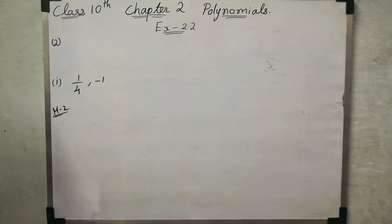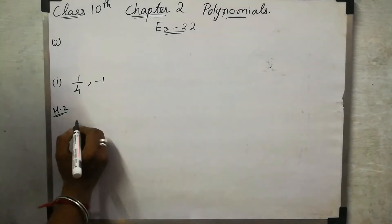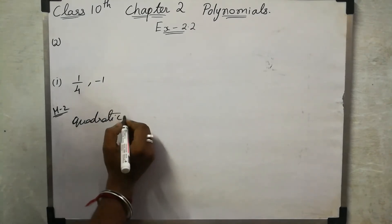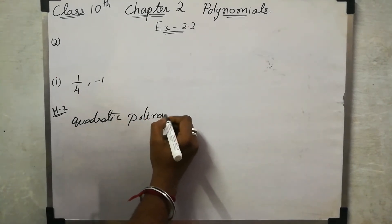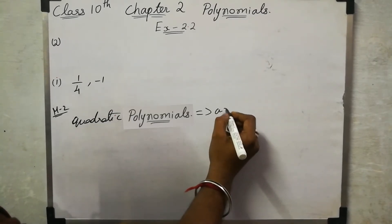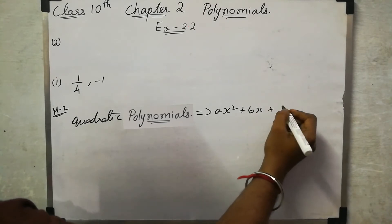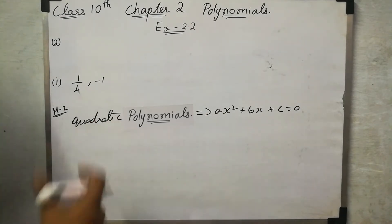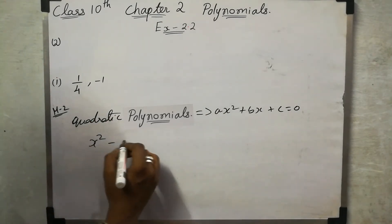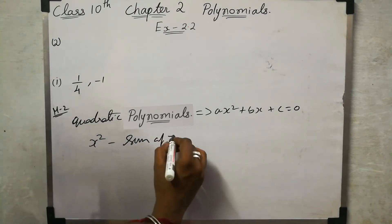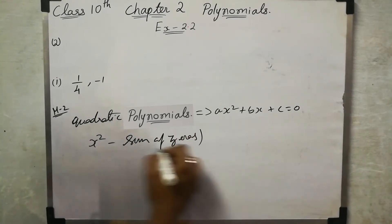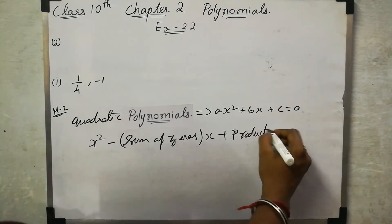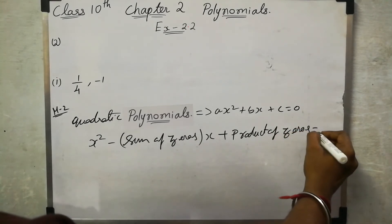Method 2. Starting with the quadratic polynomial in the form ax squared plus bx plus c equal to 0. In the quadratic polynomial, we use the sum of zeros and product of zeros. The standard form becomes: x squared minus (sum of zeros) times x plus (product of zeros) equal to 0.